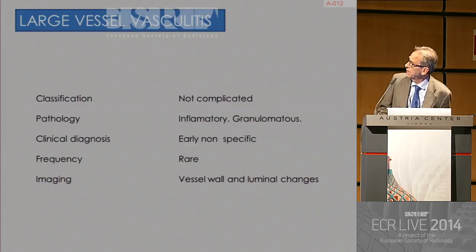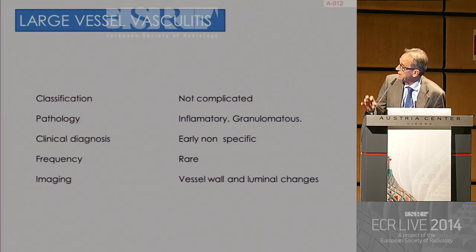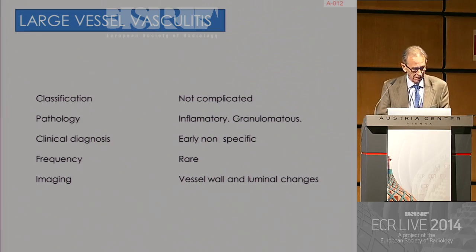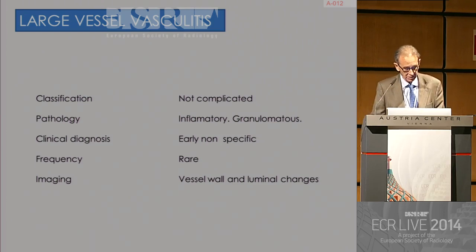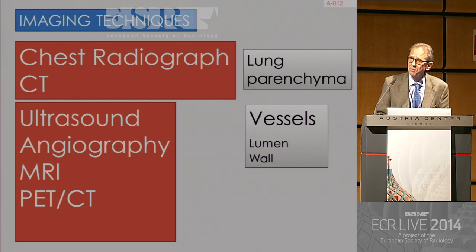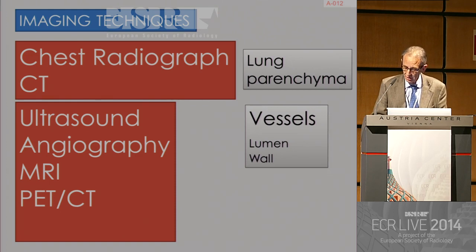The classification of large vessel vasculitis is not complicated. The pathology is mainly inflammatory and granulomatous. The clinical diagnosis is difficult in the early phases because it's nonspecific. The frequency is rare, although giant cell arteritis is more common. Imaging remains focused on looking at the vessel and the wall of the vessel. Chest radiography and CT are mainly used for looking at the parenchyma, while CT, ultrasound, angiography, MRI, and PET-CT will give us information about the vessels — the lumen and the wall.